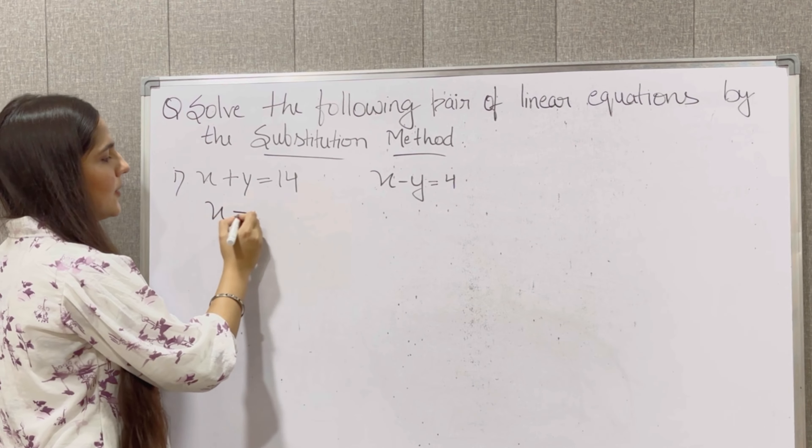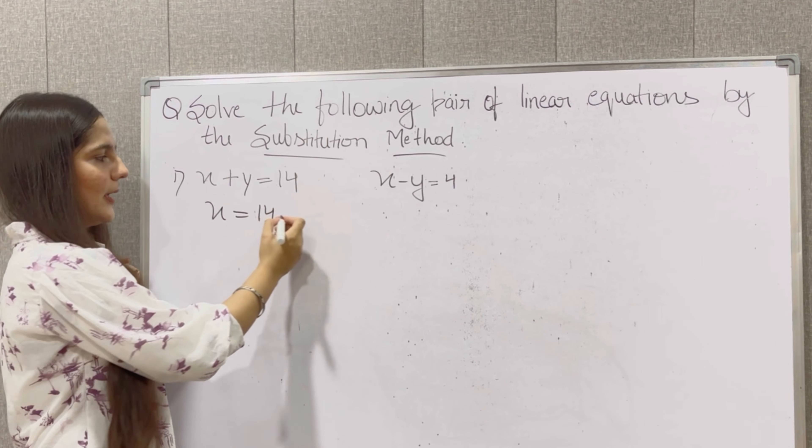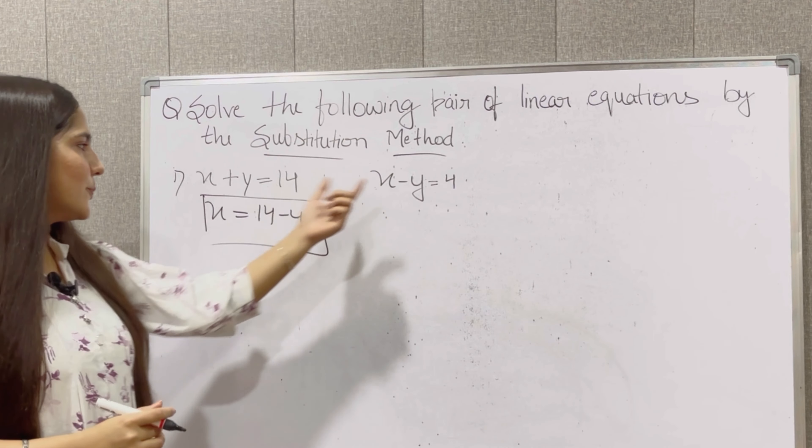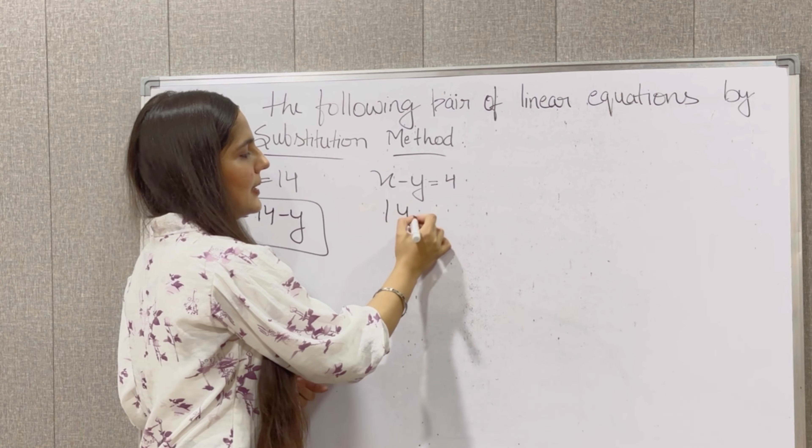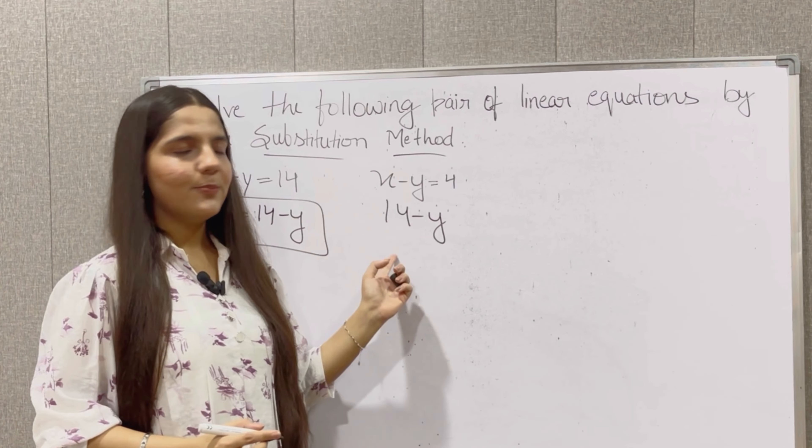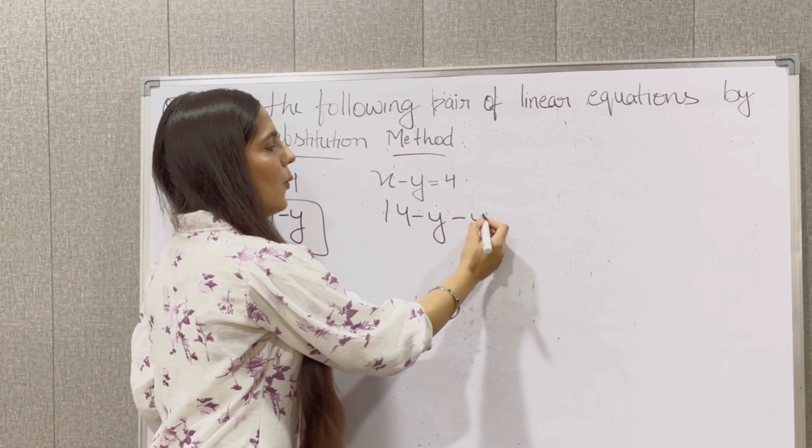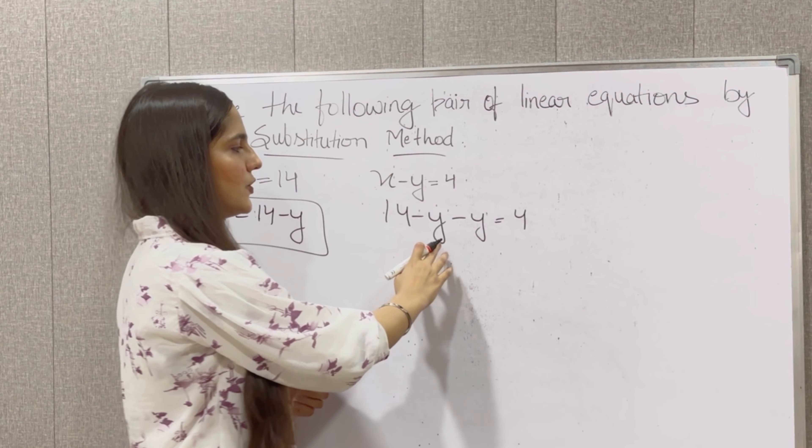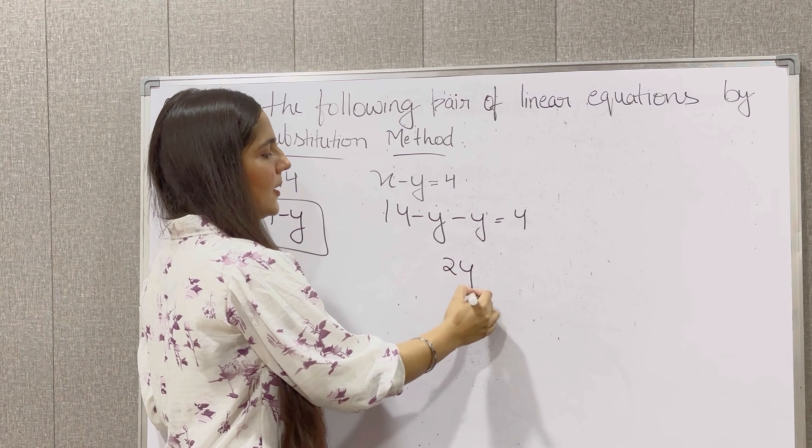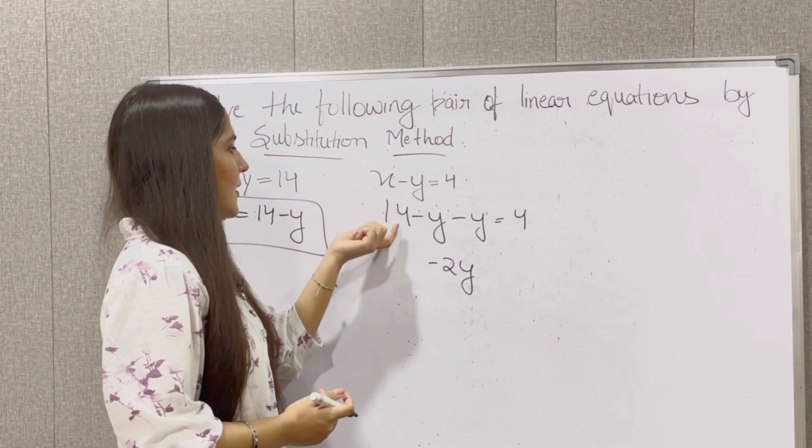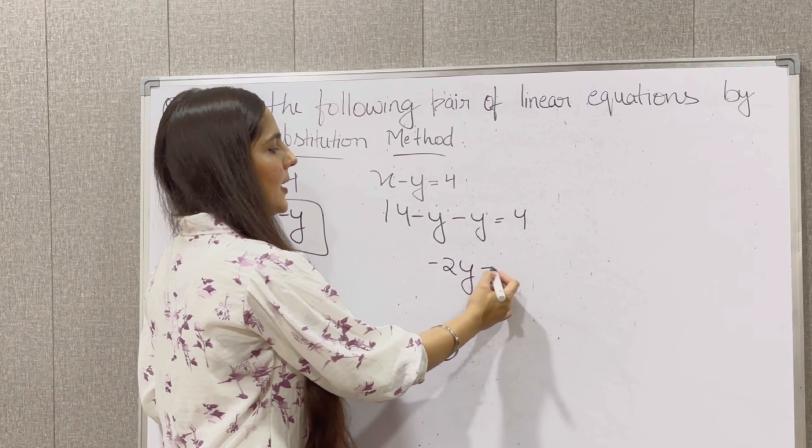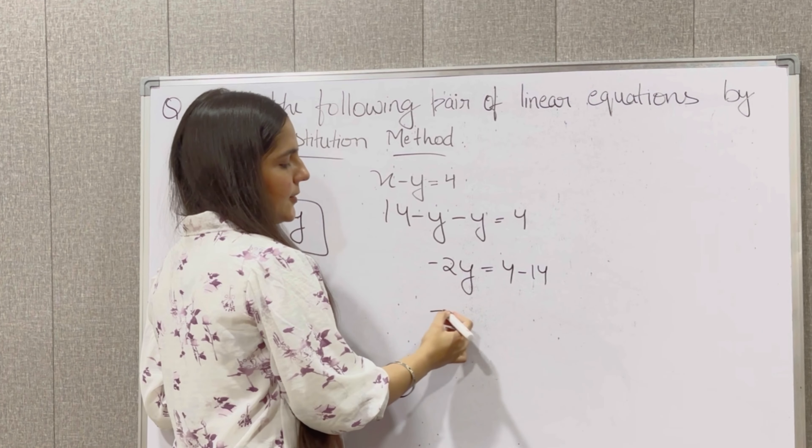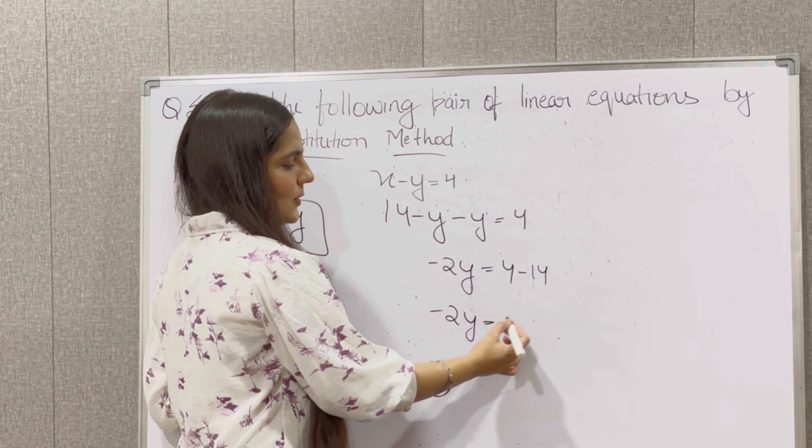So x is equal to 14, x plus y equals 14, transfer minus y. So here we have x's value. Now we are going to put this value of x here. So 14 minus y in x's place, then minus y is equal to 4. Now we have minus minus and variables. So plus will be, 1 plus 1 is 2y, but minus will be minus. We will transfer 14, so 4 minus 14.